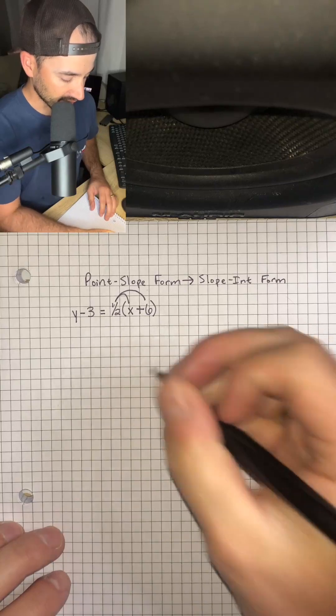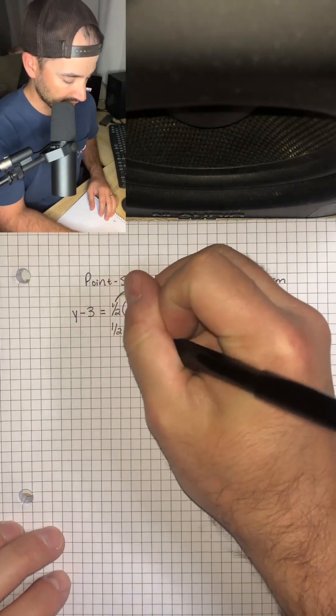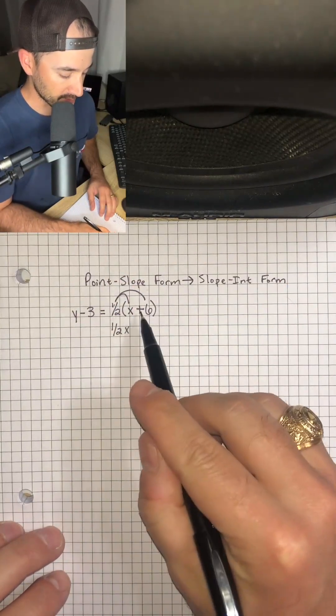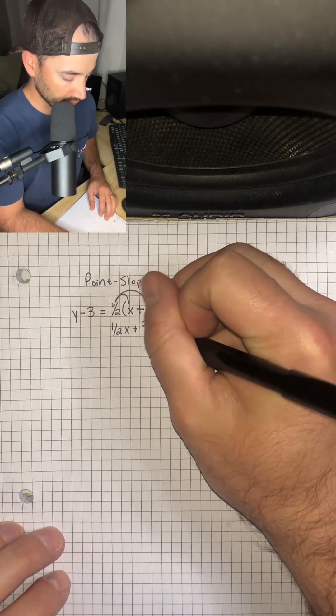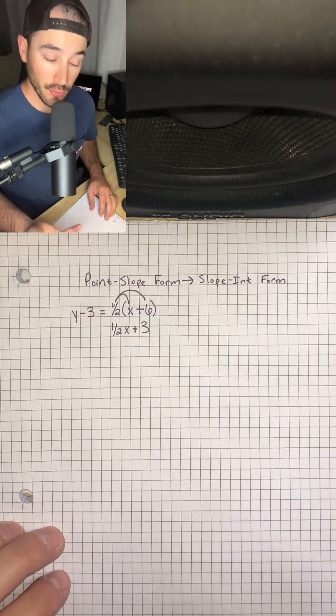we're going to have 1 half times x, which is 1 half x, and then 1 half times positive 6, which is positive or plus 3, because half of 6 is 3.